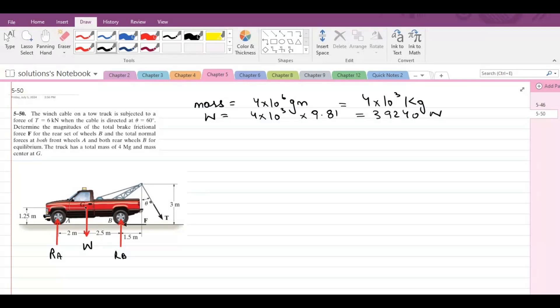Also we have one tensile force due to the cable acting at an angle of theta that is 60 degrees. We have a frictional force at the rear set of wheels B as well.